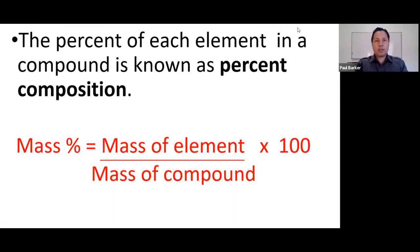Next we're going to discuss how to calculate percent composition, which is the percent by weight of a particular element in a compound. The percent of each element in a compound is known as the percent composition. The mass percent can be calculated by dividing the mass of the element over the mass of the whole compound and multiplying by 100 since it is a percent. Let's look at some examples.